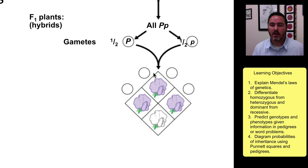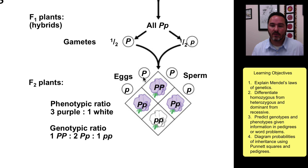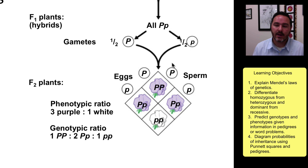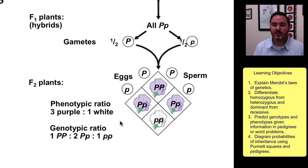Half of the eggs are going to be big P and half are going to be little P, and half of the sperm are going to be big P and half are going to be little P. Later on, there was a man by the last name Punnett who decided that one way to visually demonstrate how these gametes can come together is through using a Punnett square.